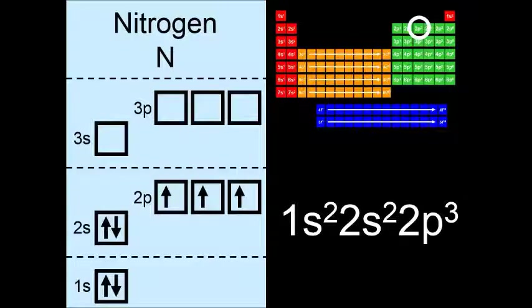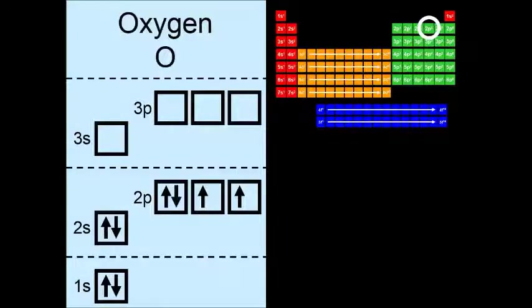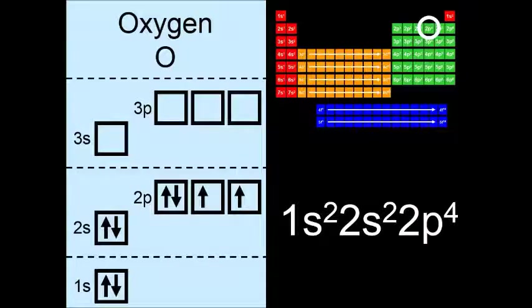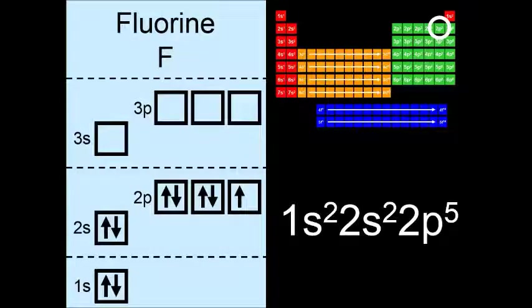Now that we go to oxygen, we can start doubling up on the electrons in the orbitals. So here is oxygen, 1s2 2s2 2p4. And here is fluorine. And then finally, neon, 1s2 2s2 2p6.